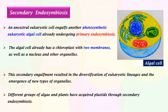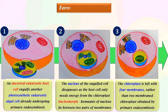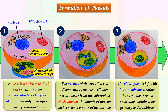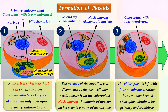Different groups of algae and plants have acquired plastids through secondary endosymbiosis. Formation of Plastids through Secondary Endosymbiosis: an ancestral eukaryotic cell with nucleus and mitochondrion engulfed another photosynthetic eukaryote algal cell that is already undergoing primary endosymbiosis. The primary endosymbiont has a double-membraned chloroplast. The nucleus of the engulfed cell disappears as the host cell only needs energy from the chloroplast. The remnants of the nucleus that lie between the two pairs of membranes is called nucleomorph, now referred to as the secondary endosymbiont. Ultimately, the chloroplast is left with four membranes rather than the two-membraned chloroplast obtained by primary endosymbiosis.